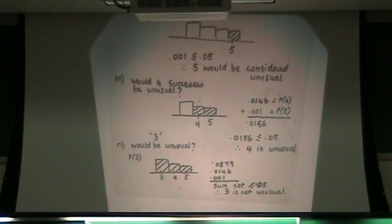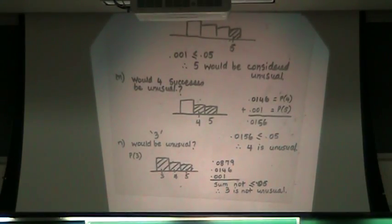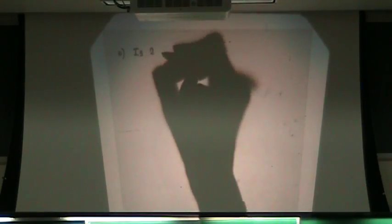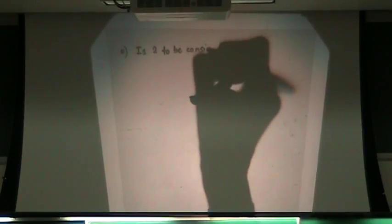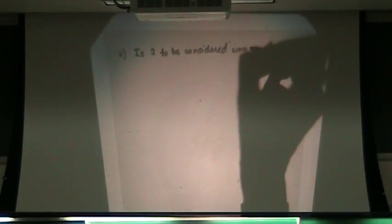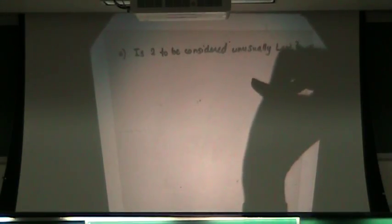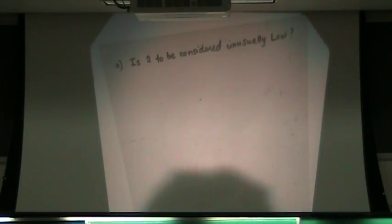How about unusually low? I want you to tell me right now if two would be an unusually low value for this problem. Luckily for us we've already found all the probabilities, but on your exam you wouldn't have found that distribution, so you would have to figure out what those probabilities are. Let's make a part O. Is two to be considered unusually low?